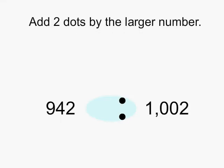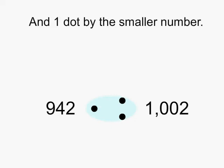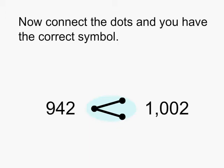Again, we will add two dots by our larger number, one dot by the smaller number, connect our dots to get the correct symbol. We'll read from left to right, 942 is less than 1,002.